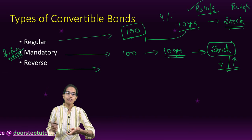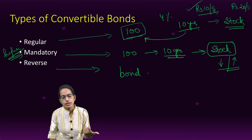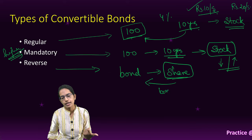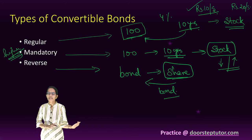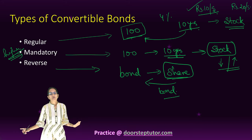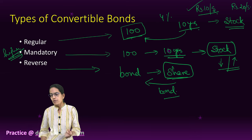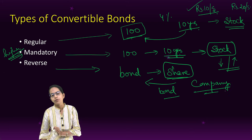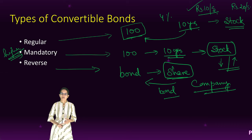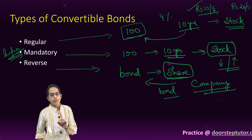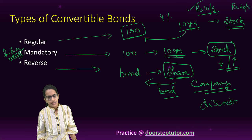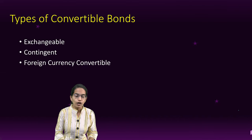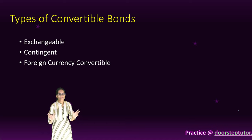Reverse, as the name suggests, is a reverse process. That means the bond could be converted into a share, but if you don't want to keep it as a share, you can take it back as a bond. I have a bond for 10 years; after 10 years it would convert into a share. But if I don't want to keep it as a share, I can go back to the bond. This would be decided solely by the company, whether the company wants to convert it or keep it as a bond — that is on the company's discretion.